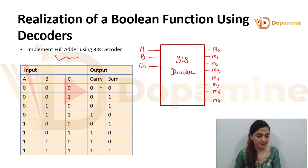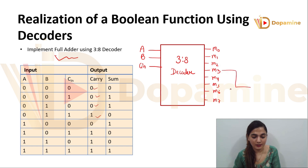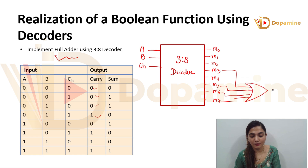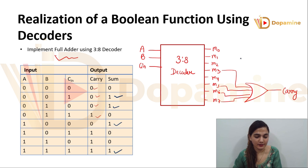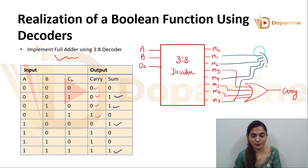Now if you check carry: from the truth table, carry is 1 for minterms 3, 5, 6 and 7. So we are going to take minterms m3, m5, m6 and m7 and OR them together to get carry. For sum, we have m1, m2, m4 and m7. So we take m1, m2, m4 and m7 and OR them together to get sum.